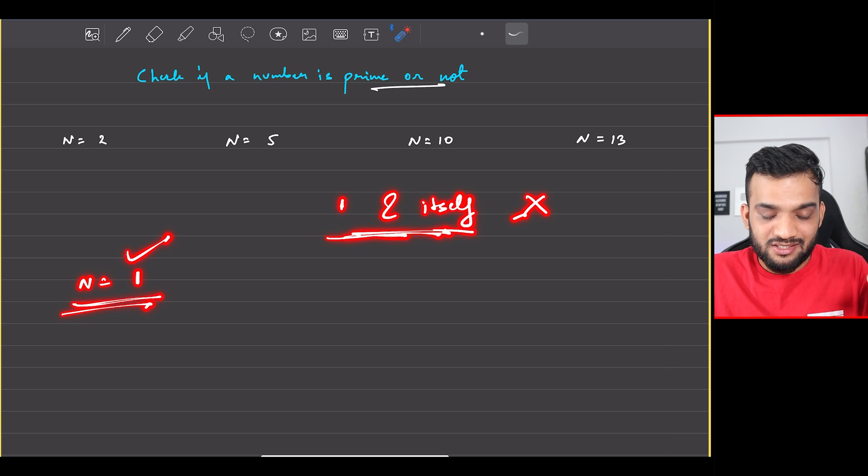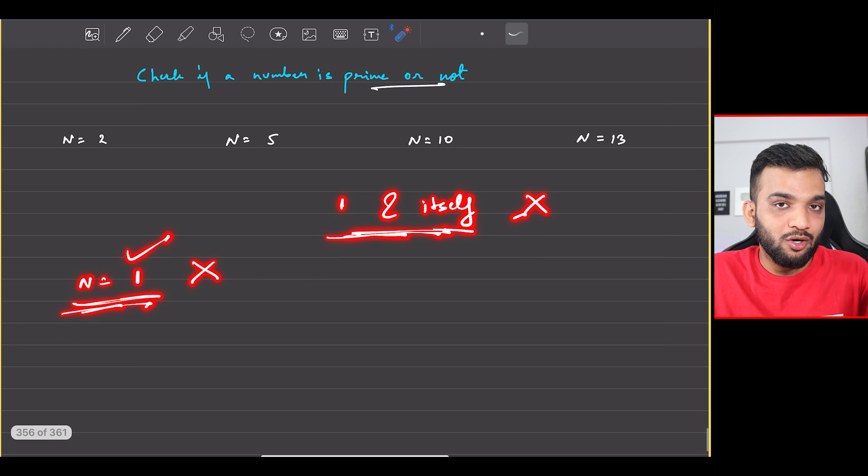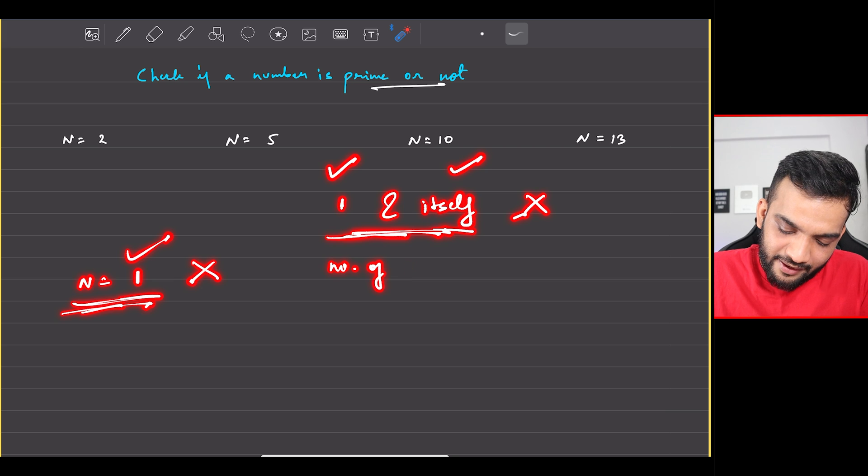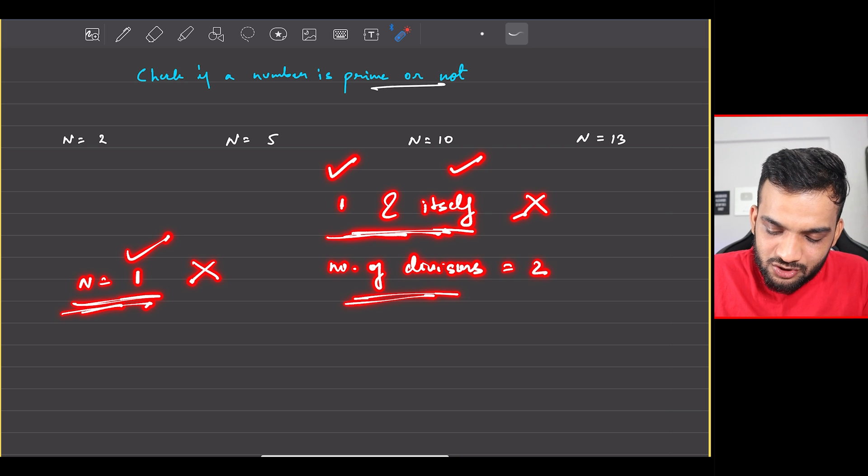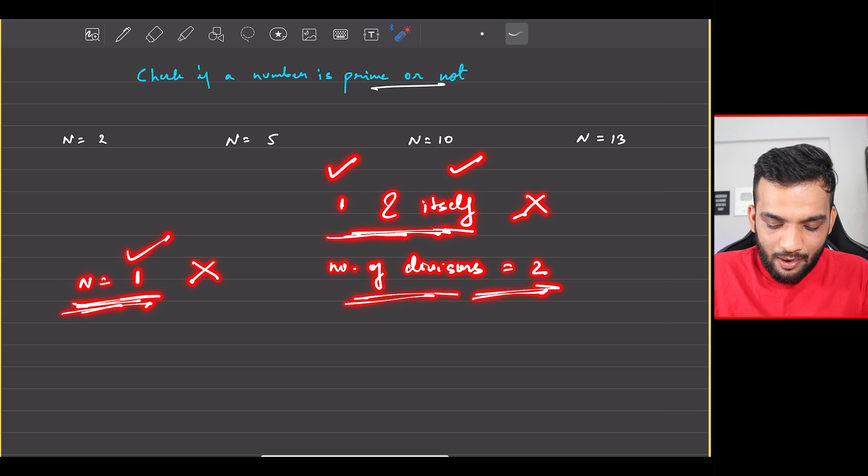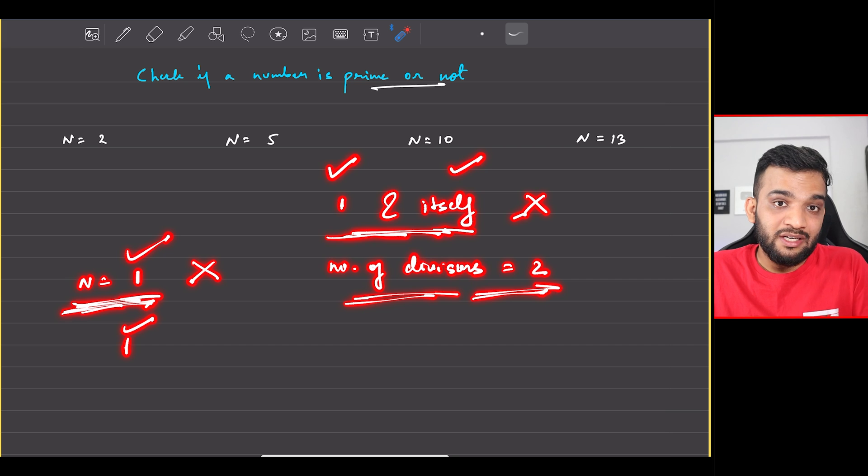A better definition is a number which is divisible by one and itself, and the total number of divisors is two - one and itself, no one else. For the number one, one is the only divisor, so there is one divisor, so it is not a prime number.